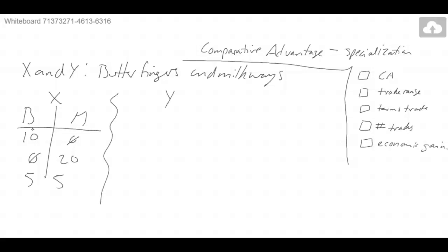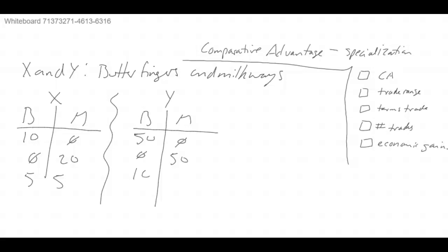Then we're going to have company or country Y. Their Butterfingers and their Milky Ways. A lot of times this is given to us in word language, just given in the scenarios, or it will be given as a production possibility curve. So Y: if they specialize, they can do 50 Butterfingers and zero, or zero and 50 Milky Ways, or 10 of each.